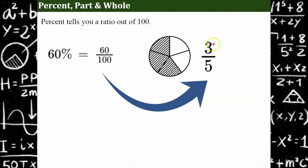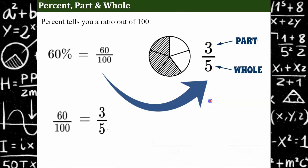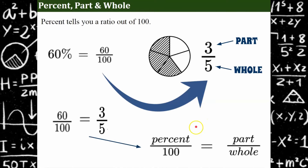So there's our percent proportion — our percent, our part, our whole. Here is the percent proportion we're going to use. We're going to put our percent over 100. You drop the percent symbol and represent it as a fraction or a ratio — 60 out of 100. And then in simplest form, it will be equivalent to your part over your whole. You're going to be missing either the percent, the part, or the whole.